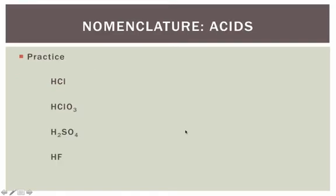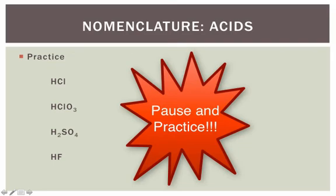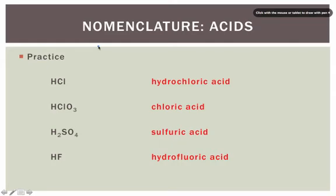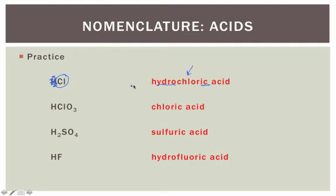Now let's put this all into practice. I'm going to ask you to pause the video for a few minutes and give the problems a try. If you have trouble, unpause the video and I'll go over the answers. Here are the answers — let's go through these one at a time. HCl: the name has nothing to do with the H. We're worried about what the negative ion is. Cl is a monoatomic ion, so we add the prefix hydro-, change the ending to -ic, and the 'chloro' comes from the name of the element chlorine. Then we tag the word 'acid' on the end to get hydrochloric acid.